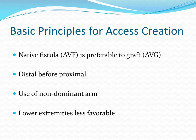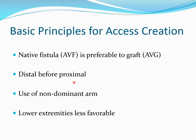Coming to long-term accesses like fistulas and grafts, the basic principles are: native fistula is preferable to graft because fistula has longer patency rates and lower complication rates. Distal before proximal — for the selected extremity, you want to start creating access more distally before moving proximally. For example, in the left upper extremity, you start near the left wrist and then move up.